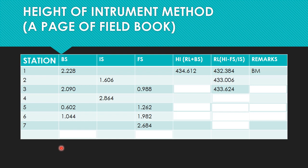We then find the new height of the instrument by adding the back sight to the reduced level. The reduced level 433.624 plus the back sight 2.090 gives a height of instrument of 435.714. Moving to the next station, the reduced level is 435.714 minus the intermediate side 2.864, which gives us a reduced level of 432.85.